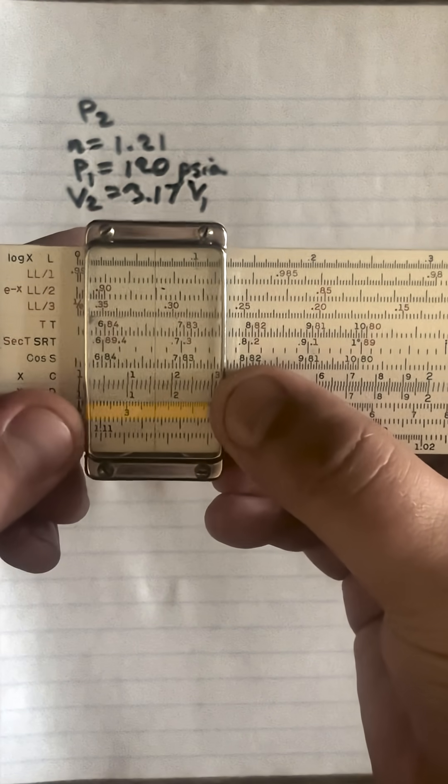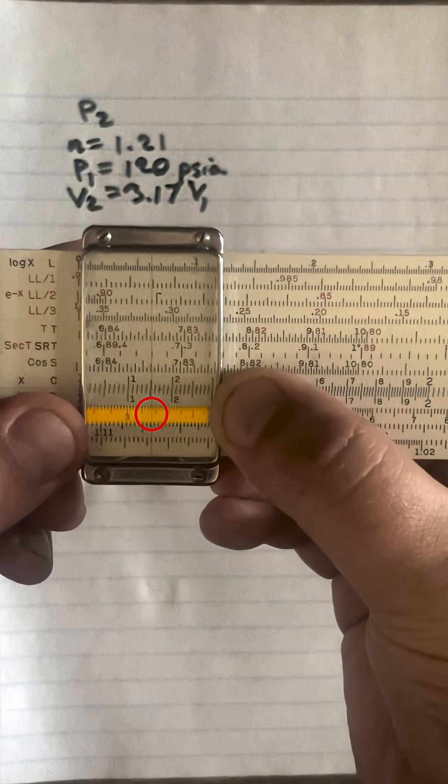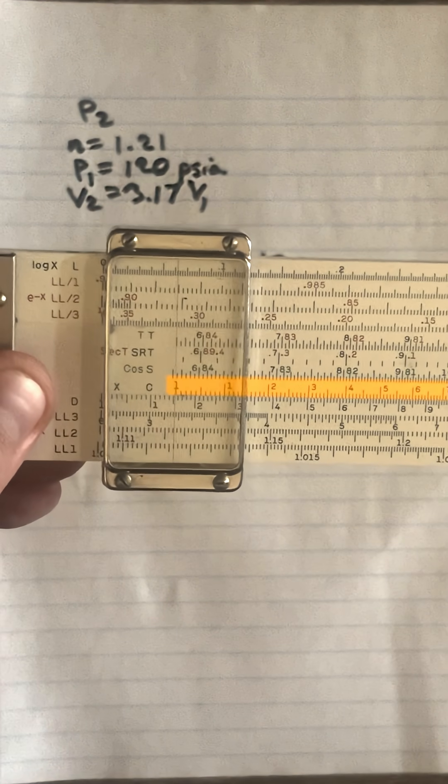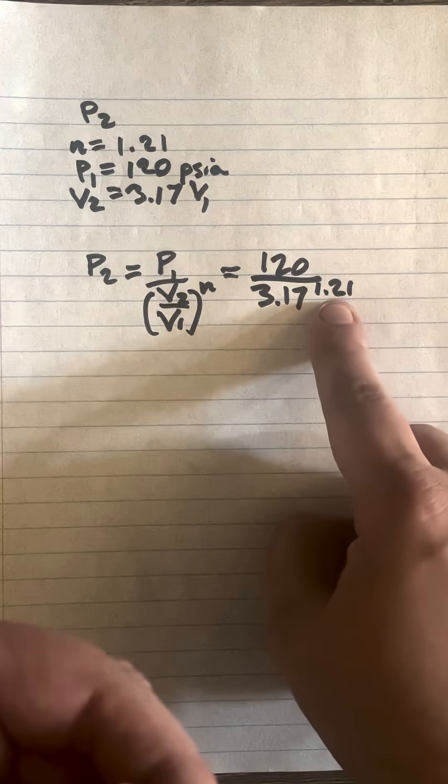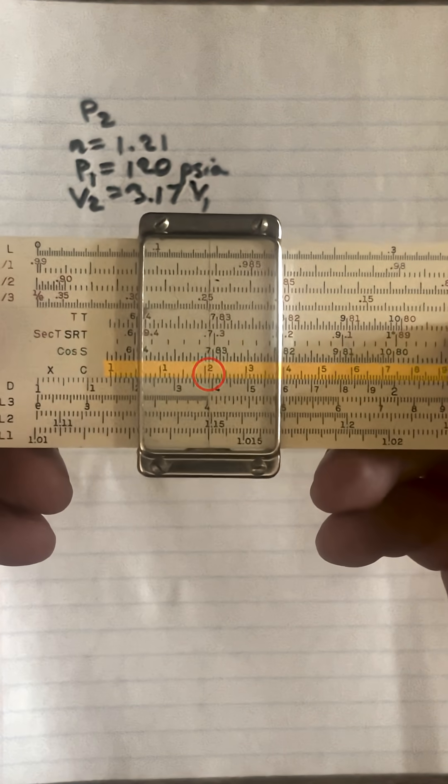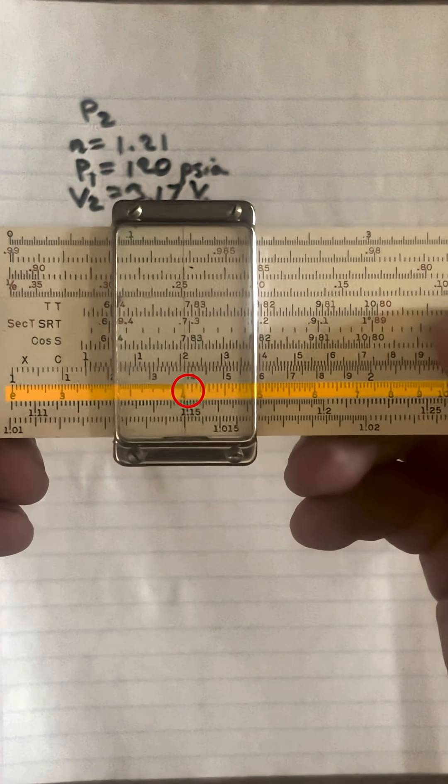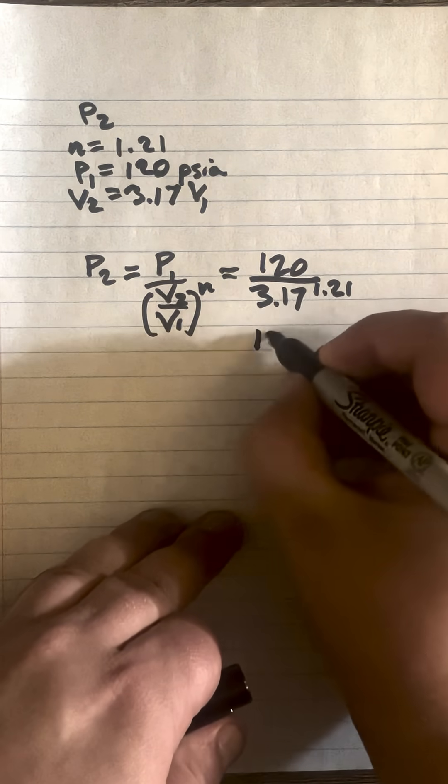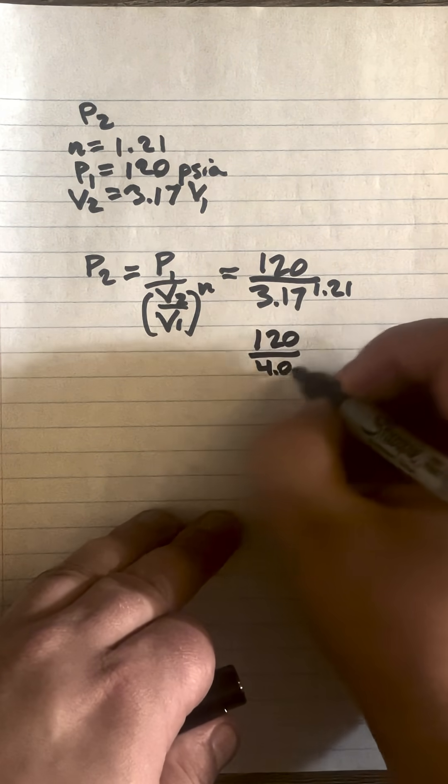So the way we're going to start this on LL3, we're going to find 3.17 and we'll move the left index to the hairline. Then we're going to move to N 1.21 on the C scale and down below on LL3, we'll find 4.04. So that turns this into 120 over 4.04.